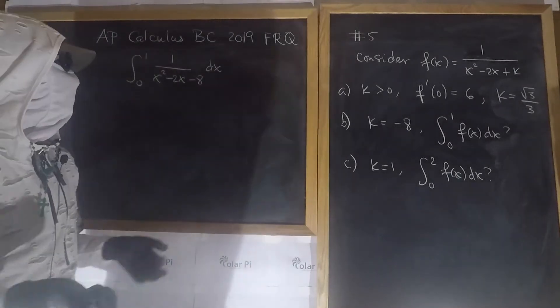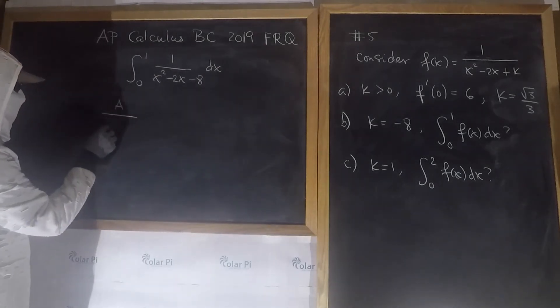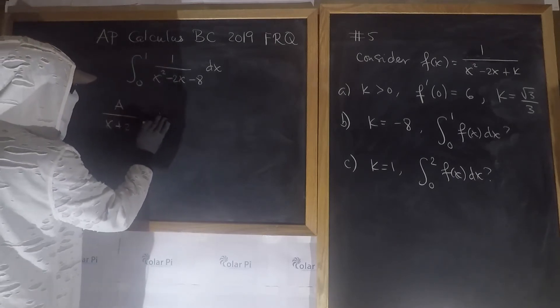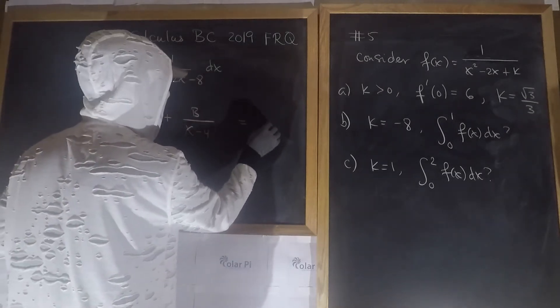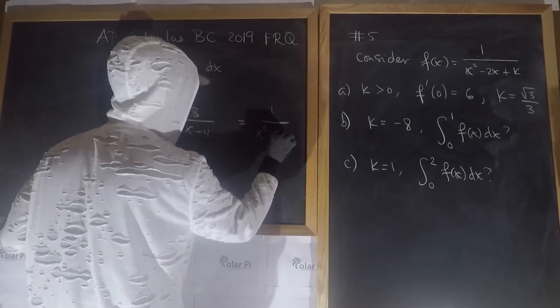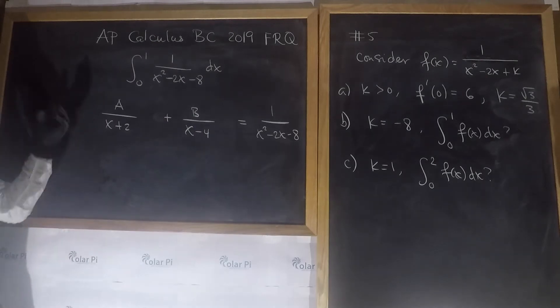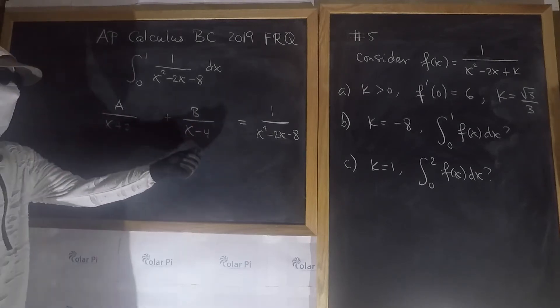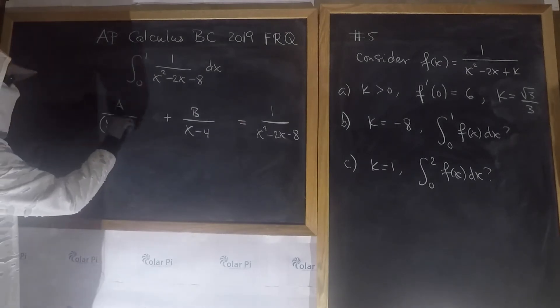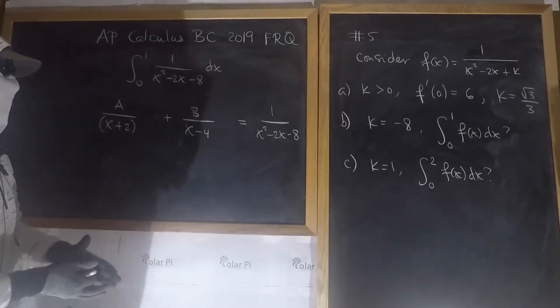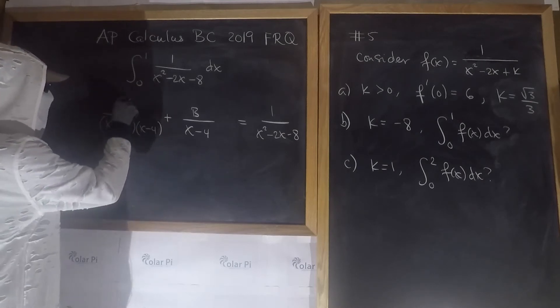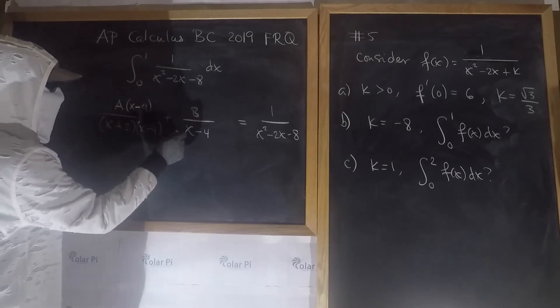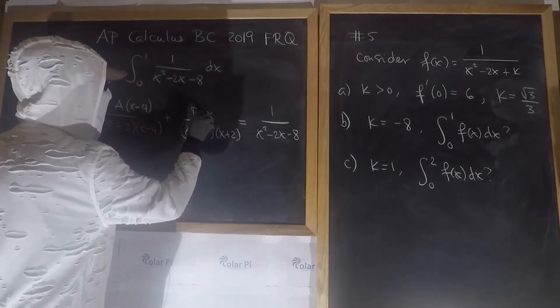This is just a simple partial fraction decomposition question. So we go A divided by x plus 2 plus, plus B divided by x minus 4 is equal to 1 divided by x squared minus 2x minus 8. This shouldn't be your first lesson on partial fraction decomposition if you've made it all the way to the AP exam. I'm only gonna show you so many details, but this times this makes that, and that's how we start partial fraction decomposition.